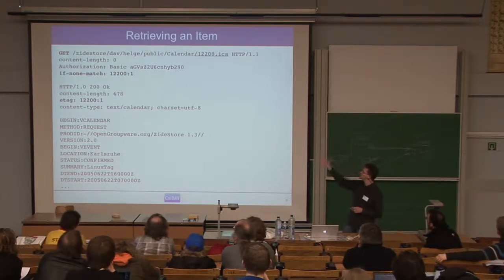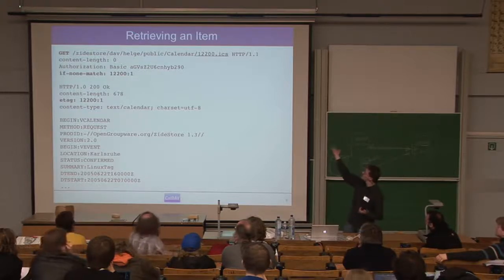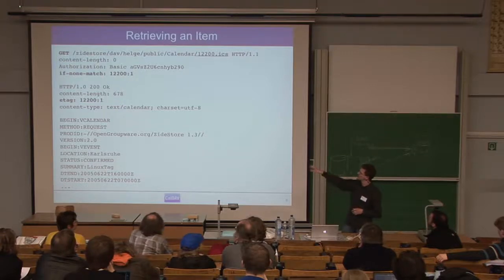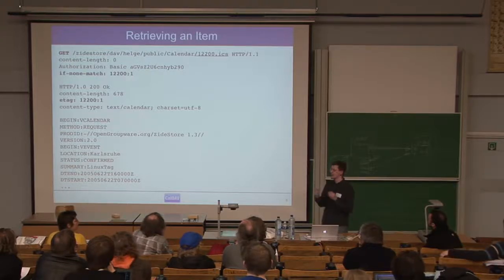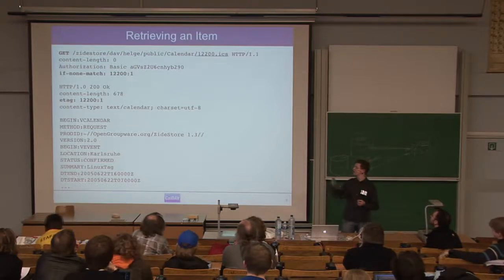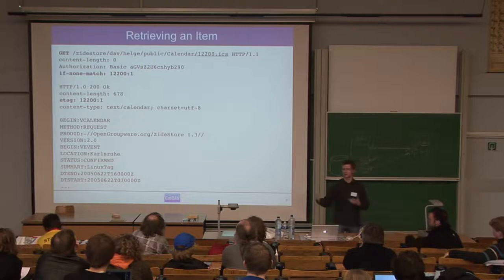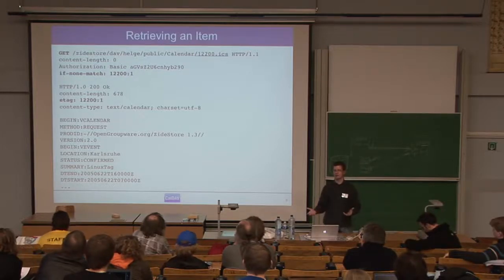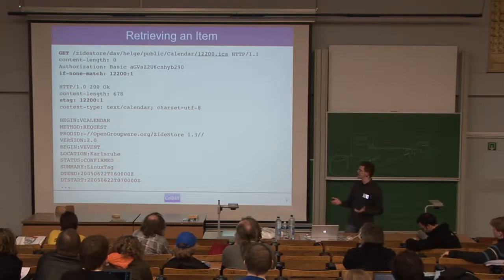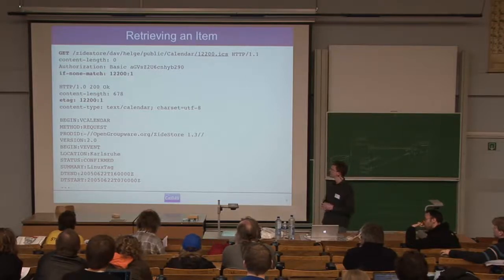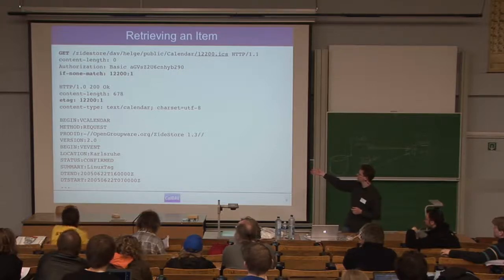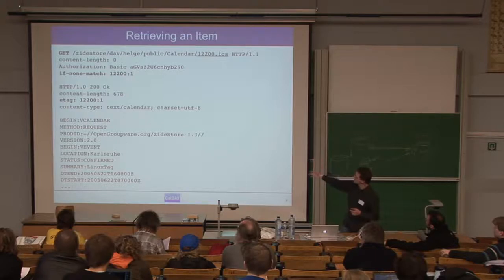For retrieving an item, you use a GET method to retrieve a URL which contains an event. The If-None-Match header is an optimization — the number behind it is just a marker indicating whether the item changed on the server. If the client retrieves a calendar event and stores it in cache, it can put that version into the request, and the server will only return the content if it actually changed. The server embeds an iCalendar file and returns a new ETag.